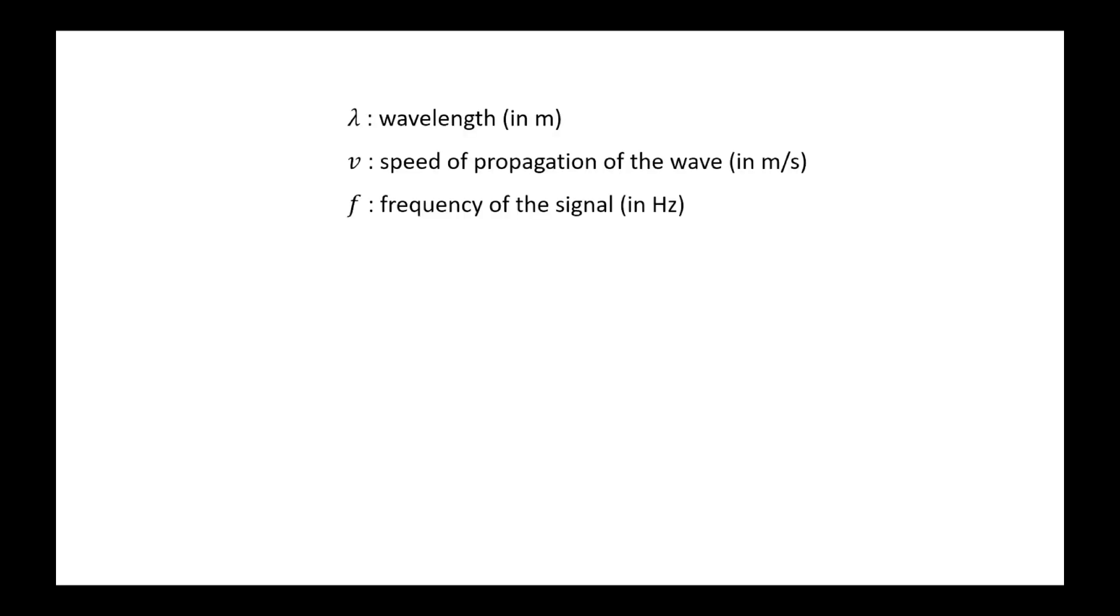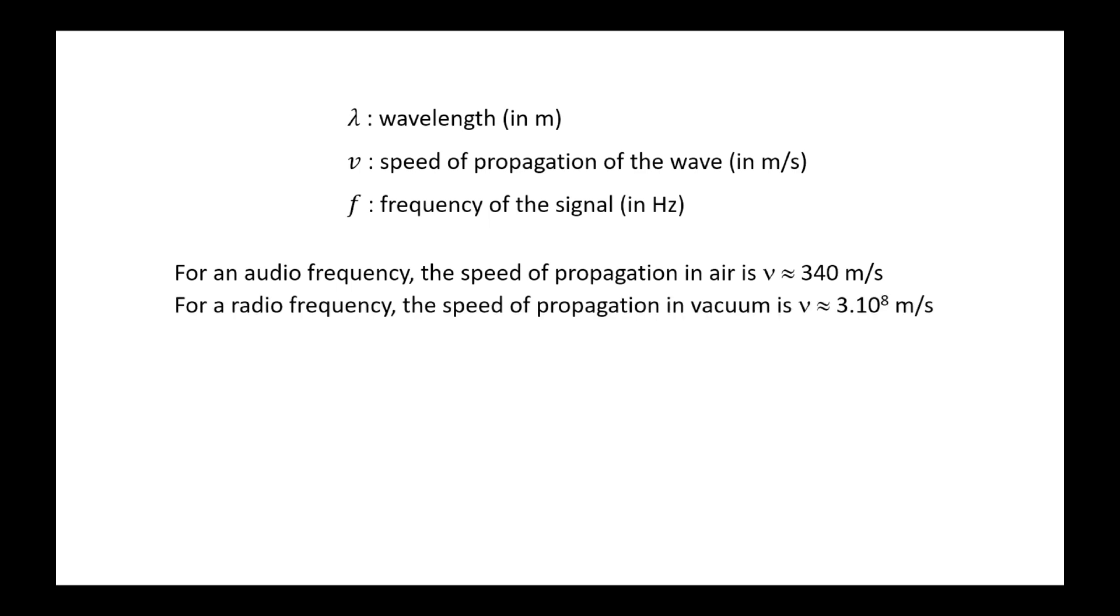The wave therefore propagates at a speed that depends on the medium and the nature of the wave, sound, light, electrical, etc. For example, a sound wave travels through air at about 340 m per second. A radio wave, or a light wave, propagates in vacuum at the speed of light, which is 300,000 km per second.